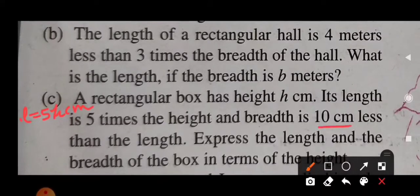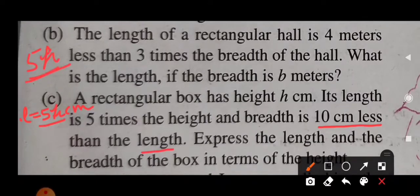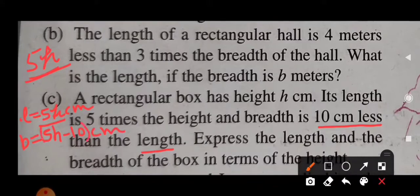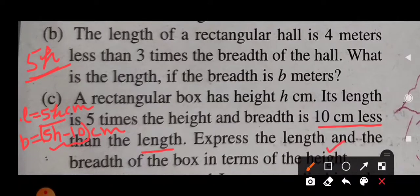And what is the breadth? Breadth is 10 centimeters less than the length. The length we calculated is 5h, so we subtract 10 centimeters to find the breadth. Breadth will be 5h minus 10 centimeters. So we have expressed length and breadth in terms of height: length is 5h centimeters, breadth is 5h minus 10 centimeters — that is, 5 times the height minus 10 centimeters.